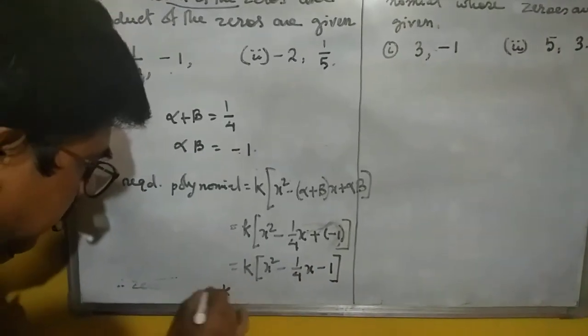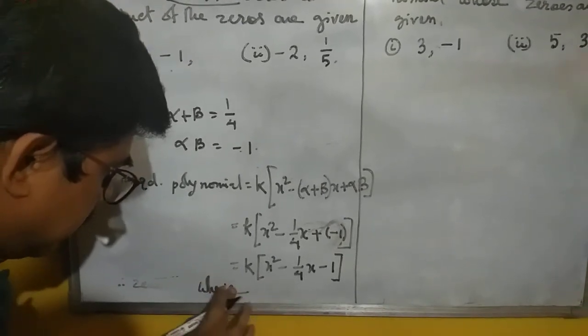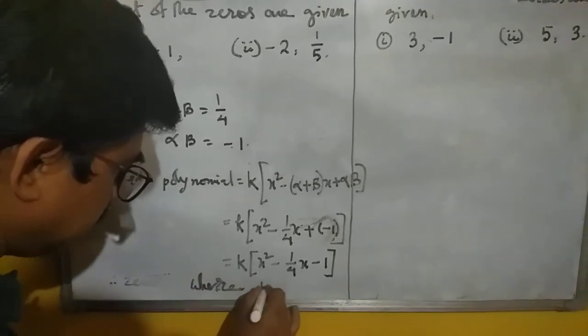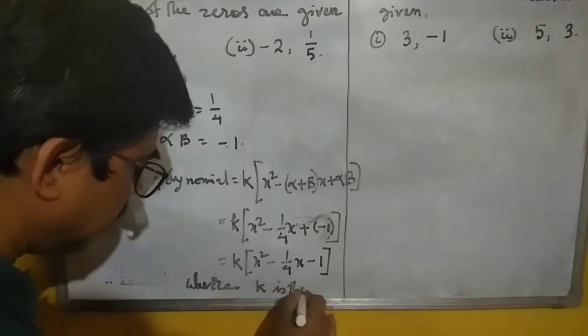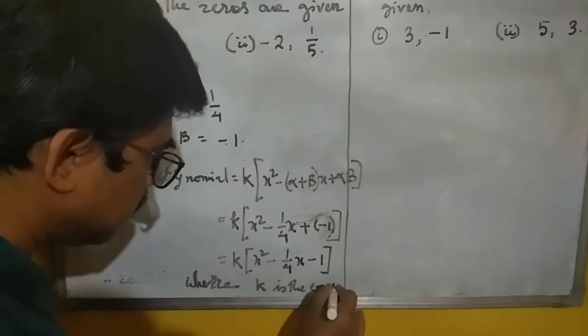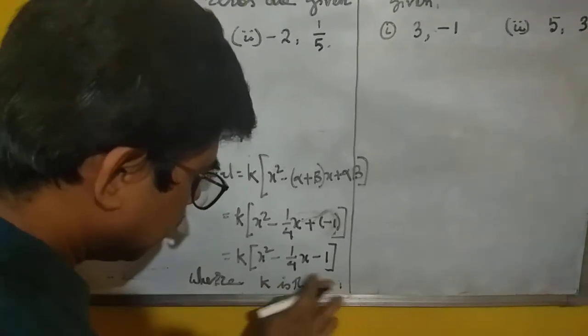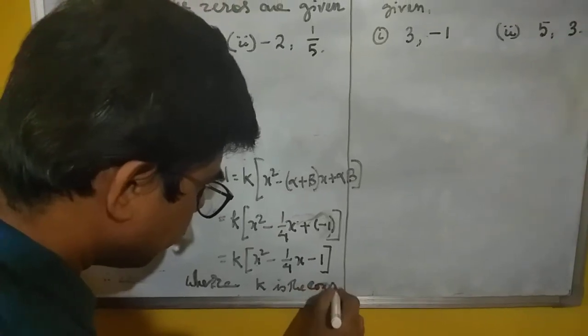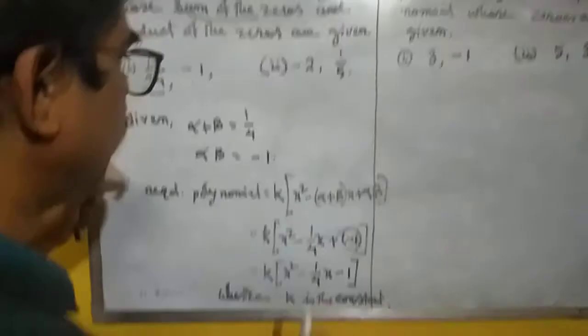k is constant, where k is the constant. So this is the constant. This is one way.